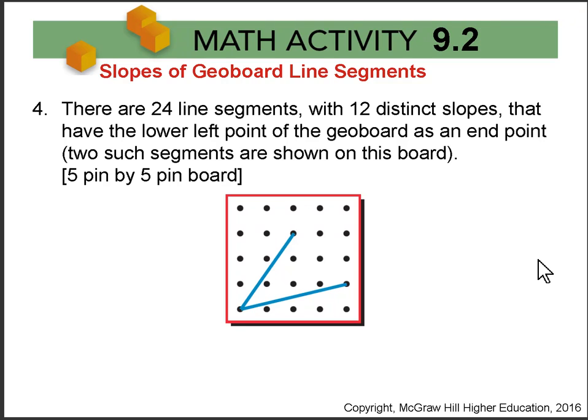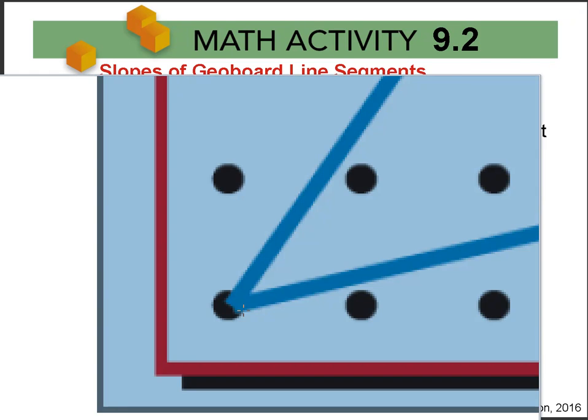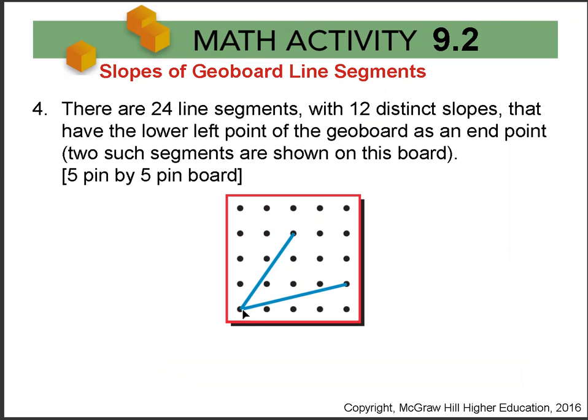In Part 4, we note there are 24 line segments with 12 distinct slopes that have a lower left point on the geoboard as an end point. And so we have two drawn here. So this is the end point. This one here. This one right here is the end point on all of them.